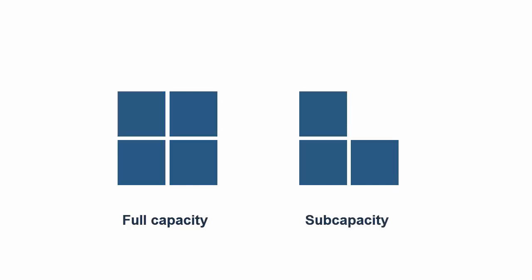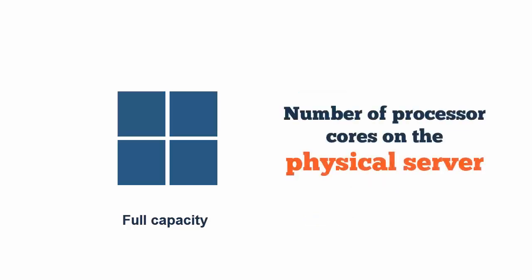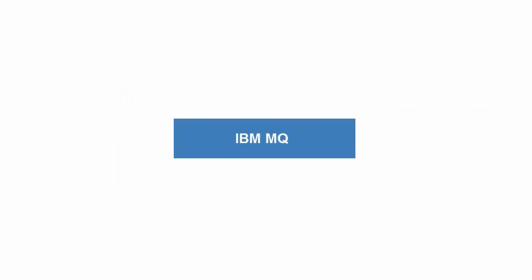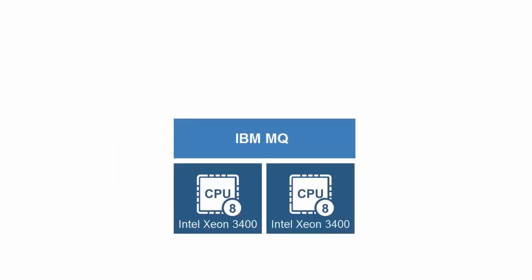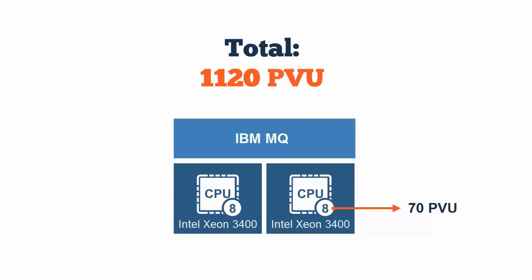There are two types of PVU licensing: full capacity and sub-capacity. PVU full capacity is counted as the number of processor cores on the physical server on which the product is installed. It is always the total capacity of the physical processor, even if the product is installed on a partition with limited CPU and thus cannot consume the full processor capacity. For example, IBM MQ is installed in a partition on a server that has two Intel Xeon 3400 processors, each with eight cores, giving 16 cores in total. According to the PVU table, when the server has two sockets, this processor model is assigned 70 PVUs per core, giving us 1,120 PVUs required to license IBM MQ.